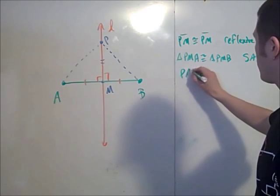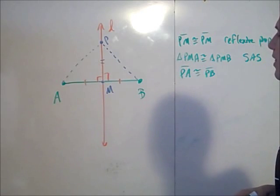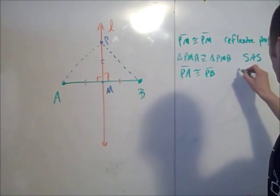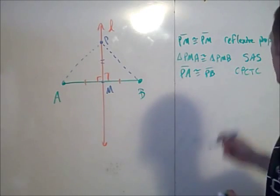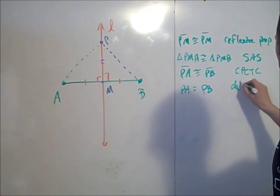And so then we have PA, the segment PA congruent to the segment PB. This is by corresponding parts of congruent triangles are congruent, CPCTC. And so PA equal to PB by the definition of congruent.